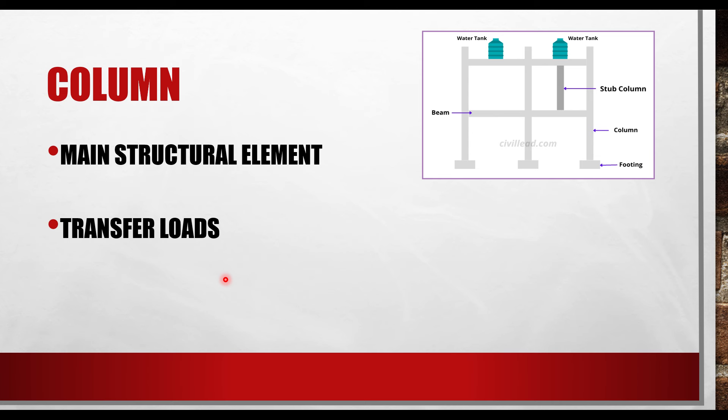In some situations you can have columns that do not extend to the footing but hang in the structure. This type of column is referred to as a floating column or stopped column. These columns are necessary when the architectural design or layout of the building does not allow for the column to start from the footing, but there is a need for a column in the upper part of the building.